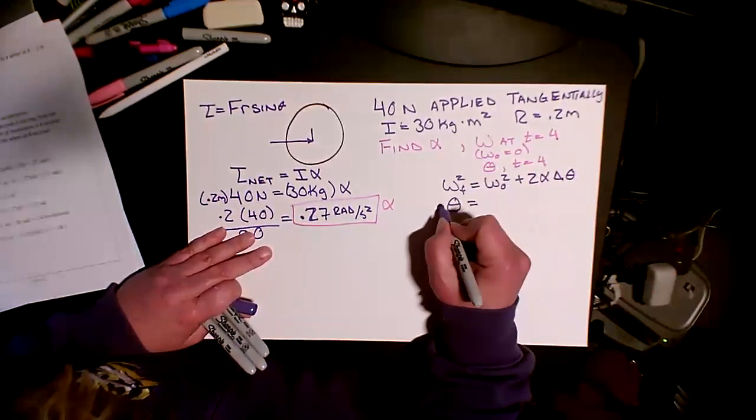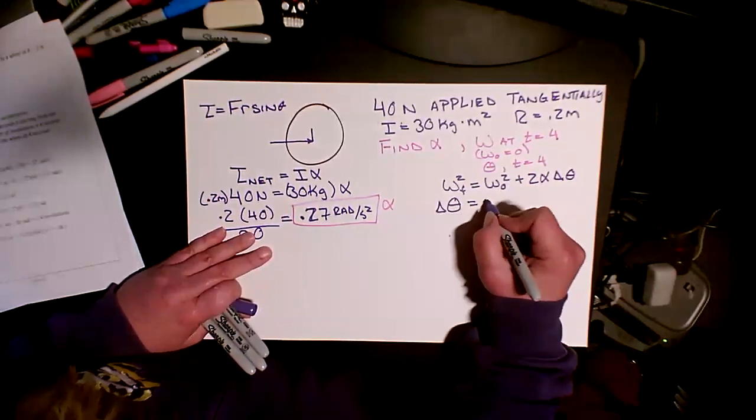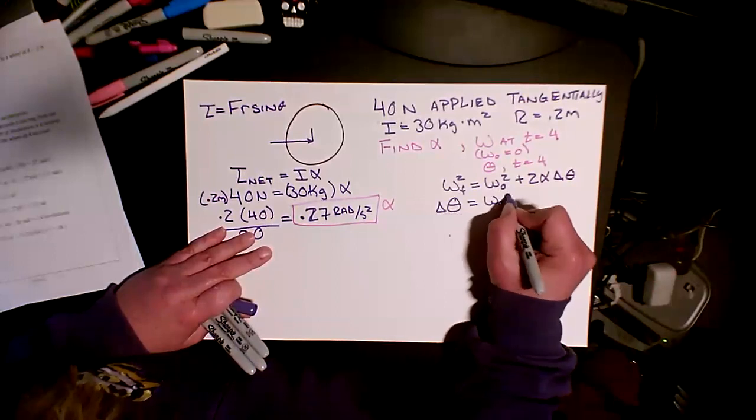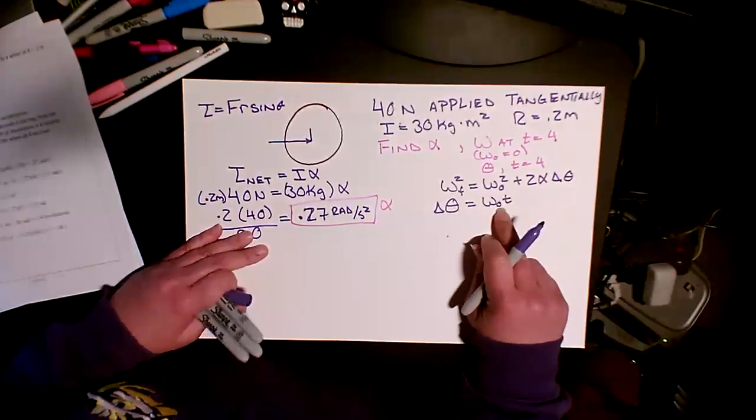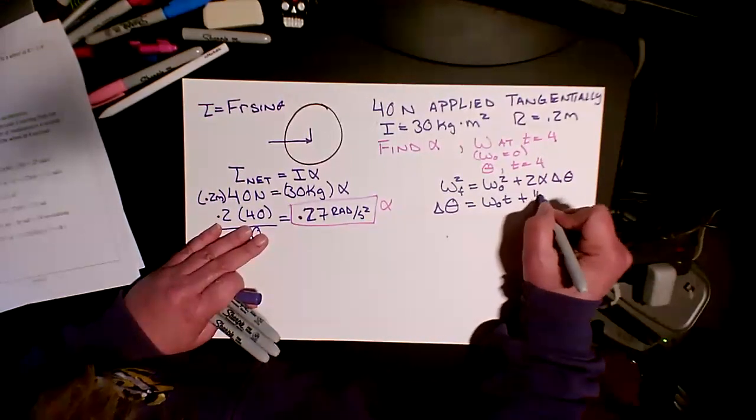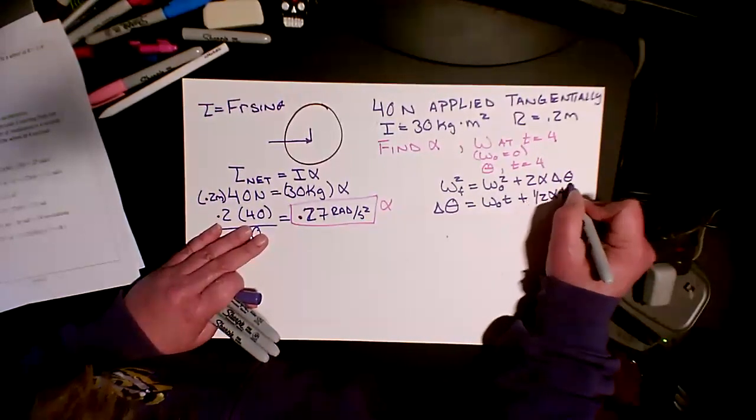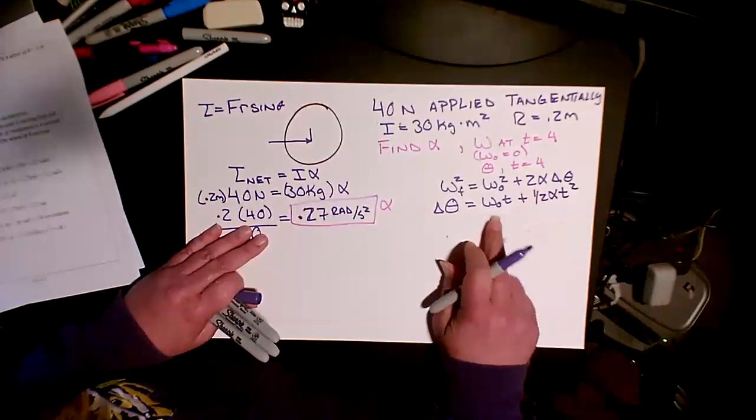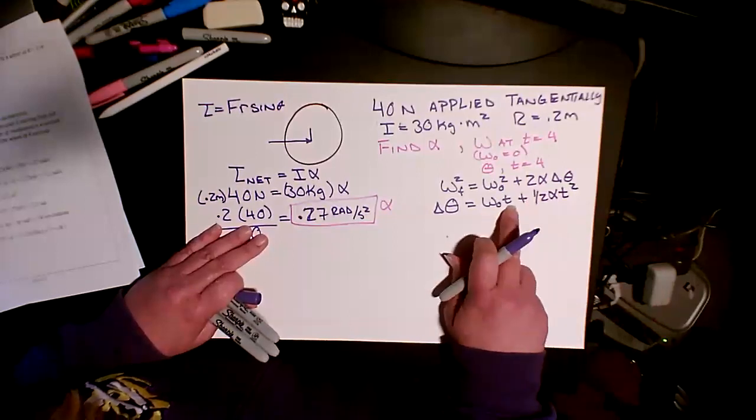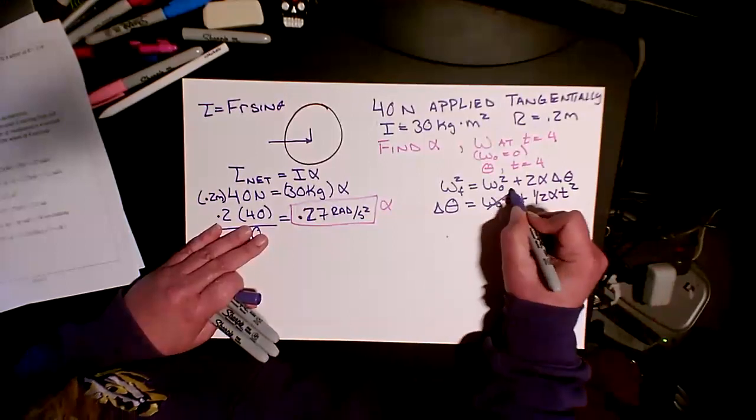I also have something that looks like, let's see, theta, my change in theta equals omega naught T, so my initial velocity, plus one half alpha time squared. Now look at this. Bada bing. Let's see, I have time, and omega naught is 0.